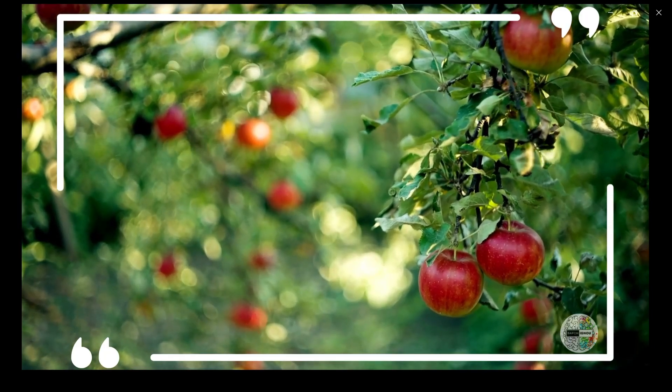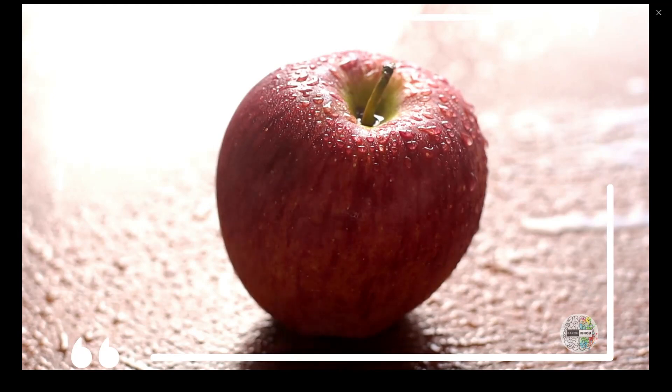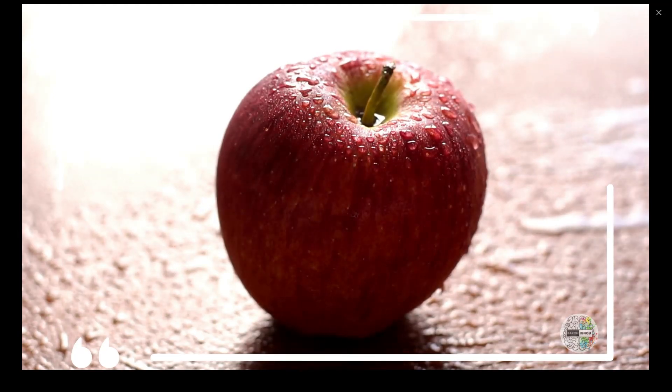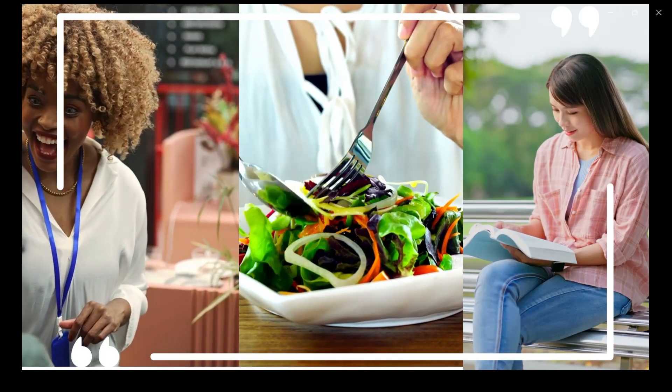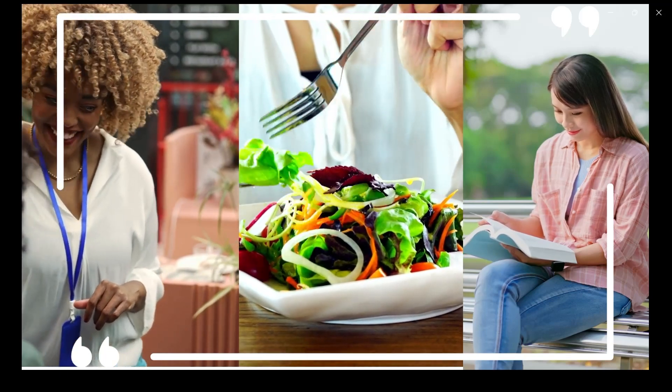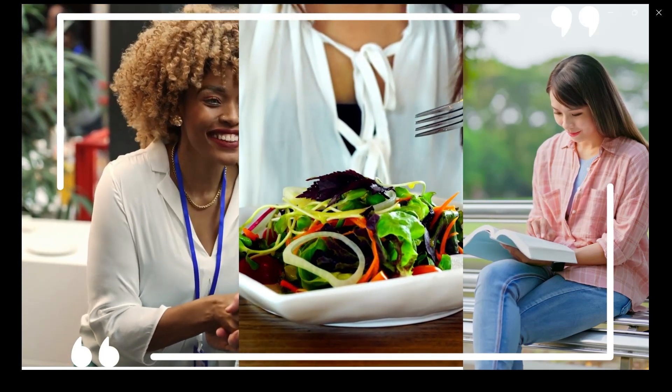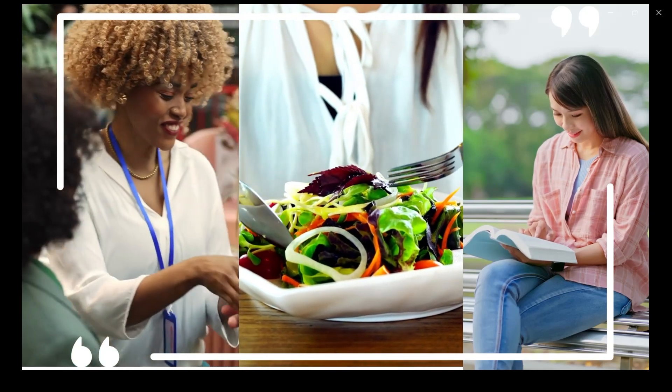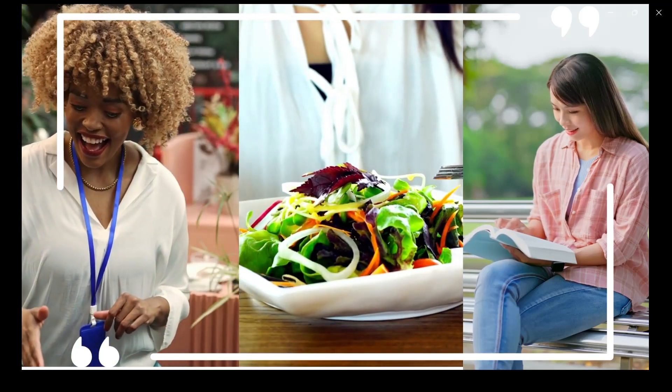For example, when you see a red apple, your eyes provide the visual puzzle pieces and your brain perceives it as a delicious fruit. So perception is like your brain's superpower that helps you make sense of the world by piecing together the information your senses gather. It's what allows you to recognize people's faces, enjoy the taste of food and understand the meaning of words when you read or hear them.